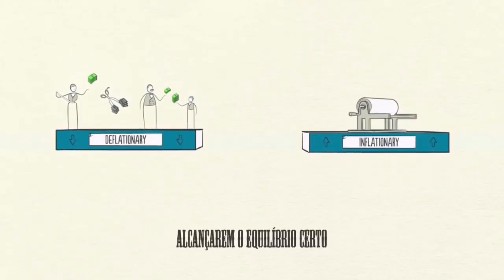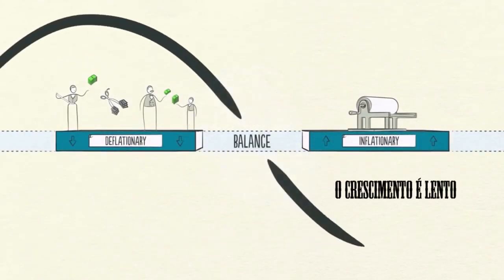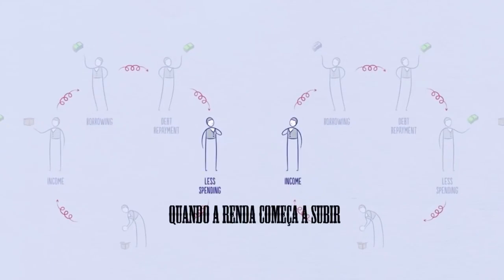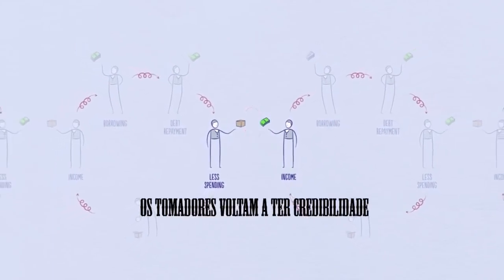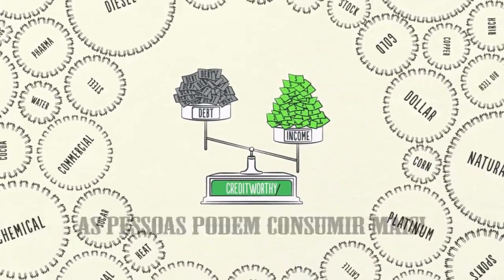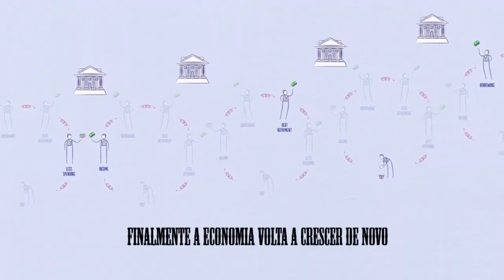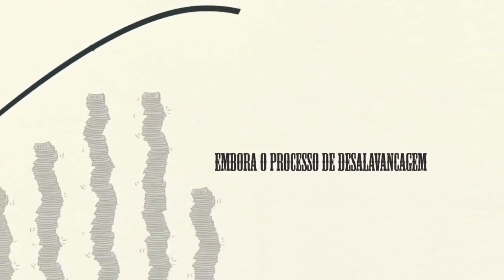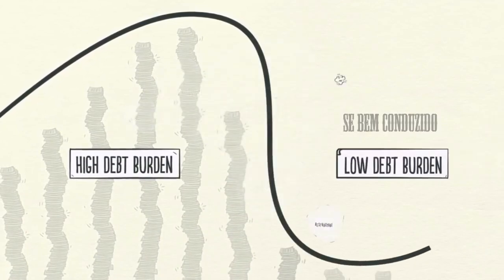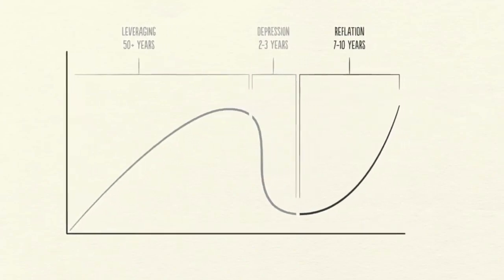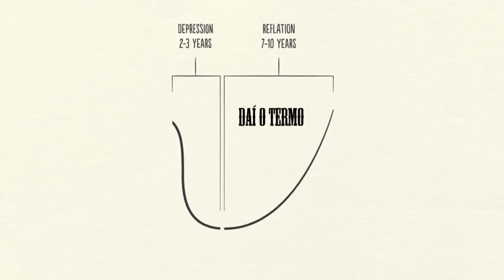If policymakers achieve the right balance, a deleveraging isn't so dramatic — growth is slow, but debt burdens go down. That's a beautiful deleveraging. When incomes begin to rise, borrowers begin to appear more creditworthy, and lenders begin to lend money again. Debt burdens finally begin to fall. Able to borrow money, people can spend more, and eventually the economy begins to grow again, leading to the reflation phase of the long-term debt cycle. Though the deleveraging process can be horrible if handled badly, if handled well, it will eventually fix the problem. It takes roughly a decade or more for debt burdens to fall and economic activity to get back to normal — hence the term 'lost decade.'